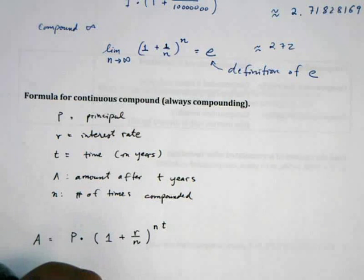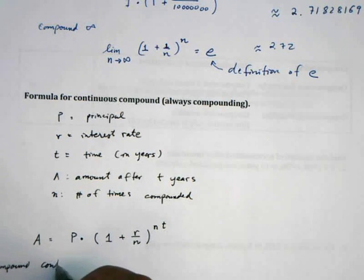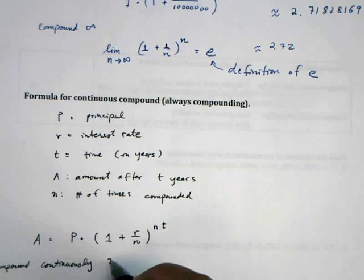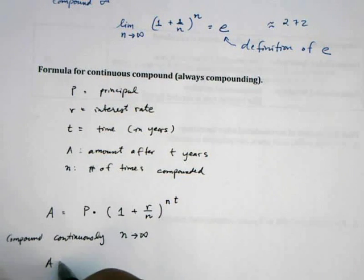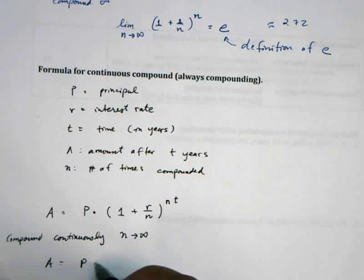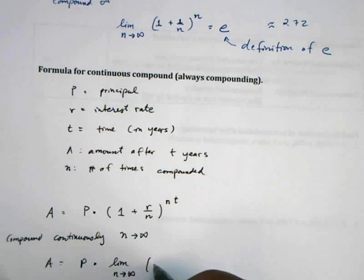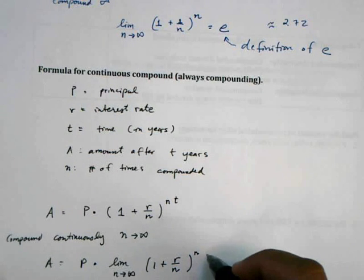But if you compound continuously, you have to take the limit as N approaches infinity. So A then becomes P times the limit as N approaches infinity of one plus R over N to the NT.